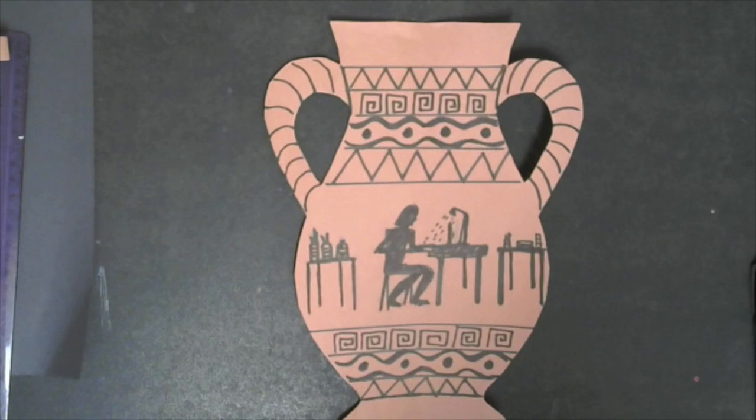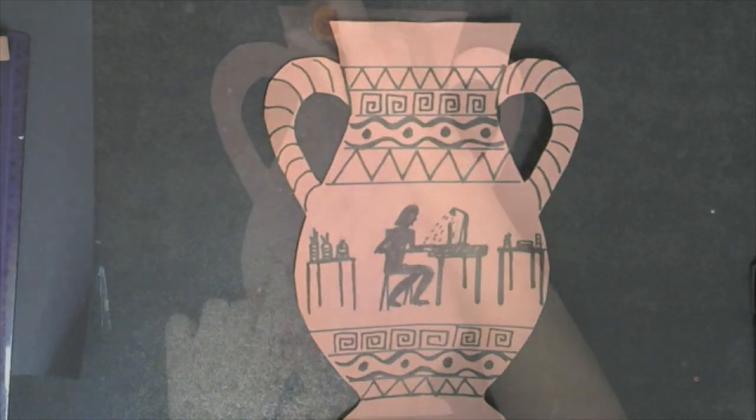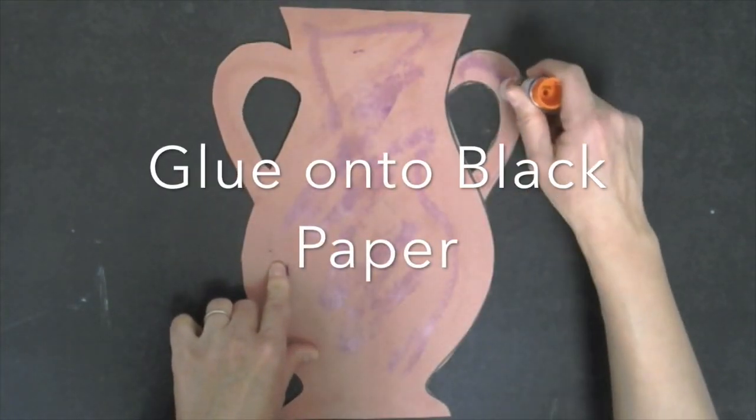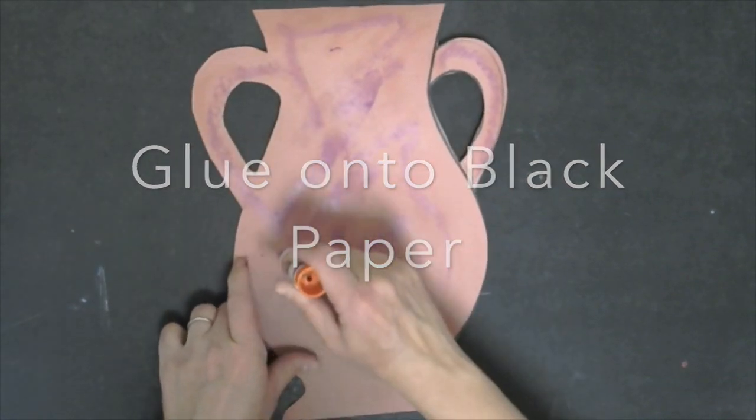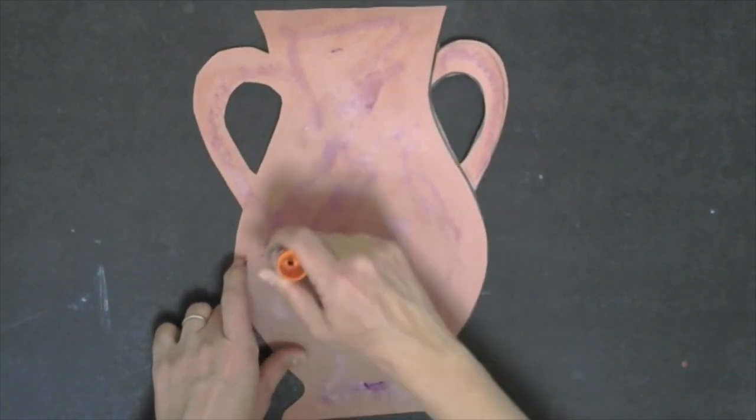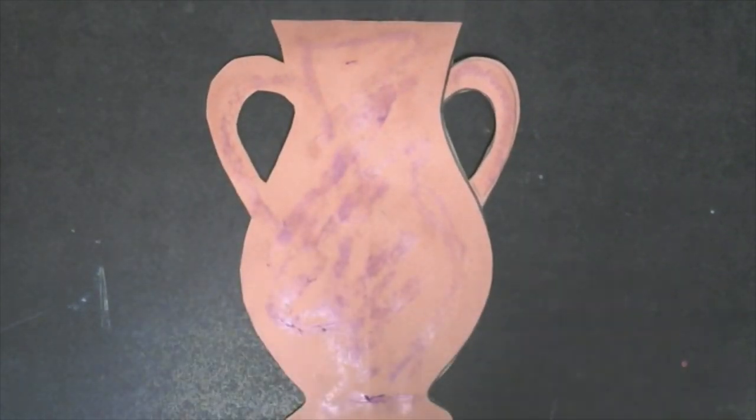Once you are done you want to take your piece, turn it around, add glue to the backing. Make sure you fill the entire space with glue.